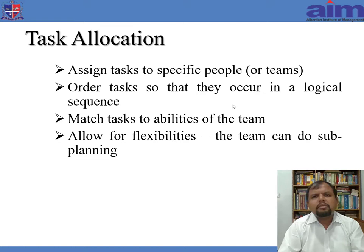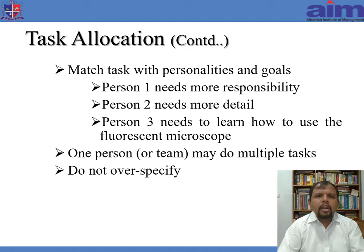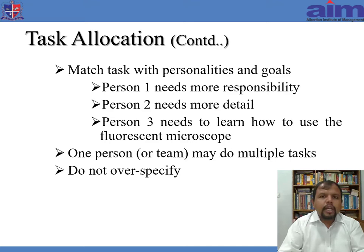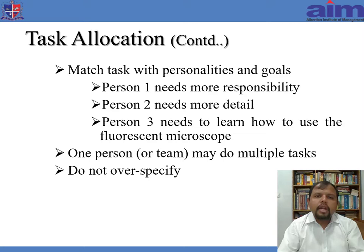Allow for flexibility so that teams can plan more appropriately to achieve targets. When you allocate tasks, look at the personality and goals of team members. One person may take more responsibilities, another might need more detail on the project, and a third might need training to learn a new technology. Ensure that allocation matches the personality and goals of each team member, and please don't over-allocate — because if one person is overburdened while another has little to do, the first will become demoralized over time. Task allocation has to be very clear.